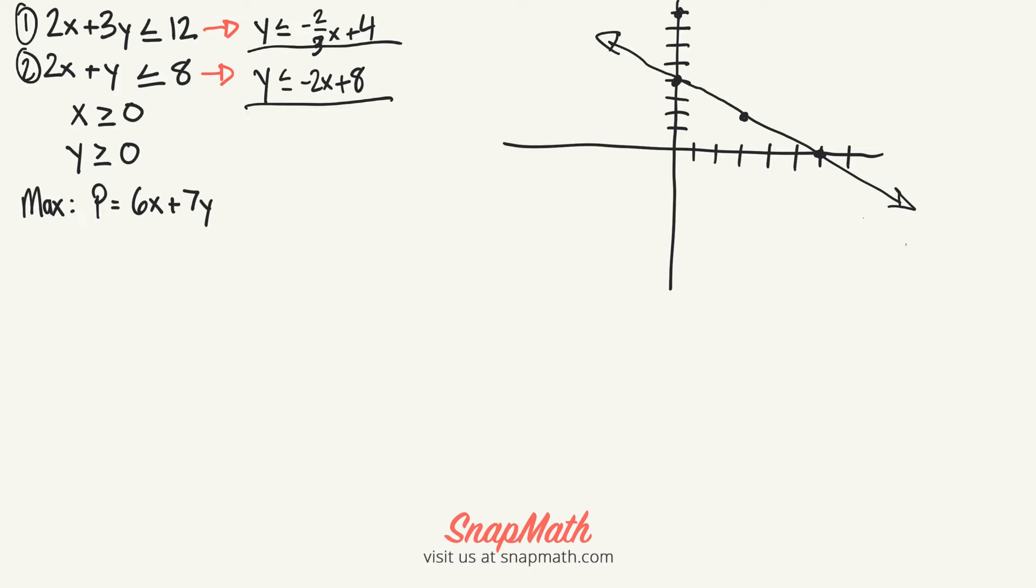The next one is positive 8 and down 2 over 1, down 2 over 1.